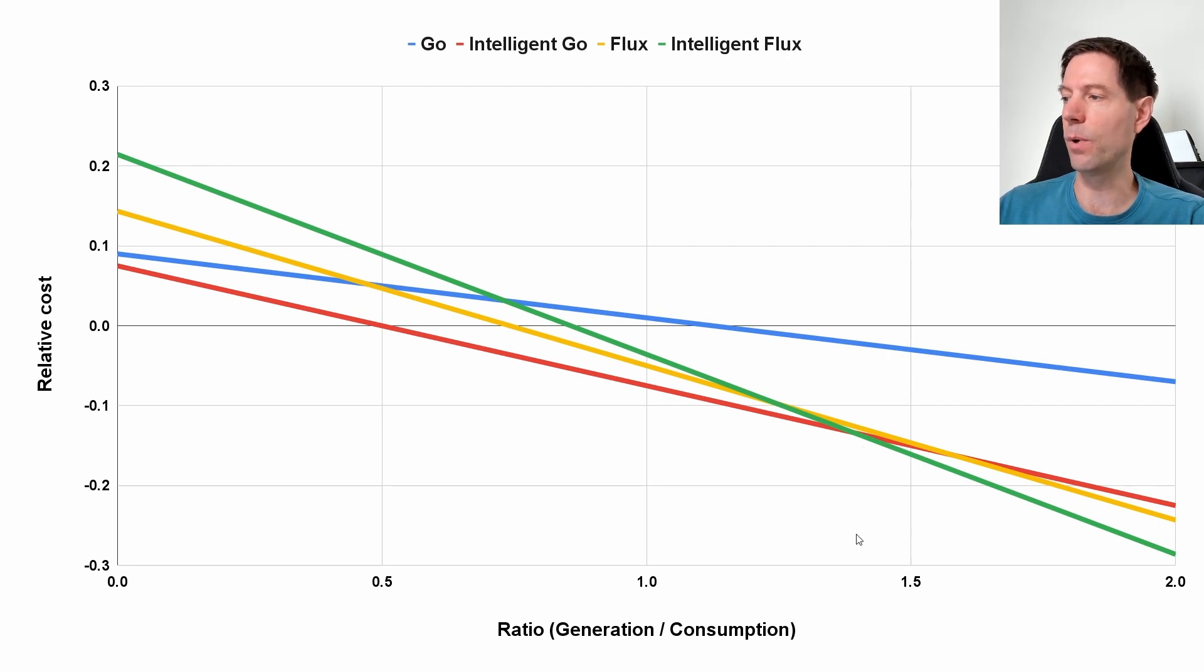And any ratio below 1.4, that is if my generation is less than 1.4 times my level of consumption, then I should be on Intelligent Go. Now that was what it was looking like at the beginning of the year but since then obviously the tariffs have changed and I've also added the Cozy tariff into this chart.